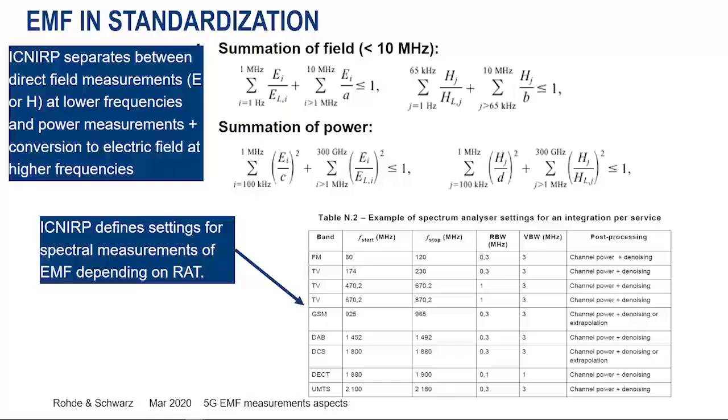It's also important to consider that EMF measurements depend on the frequency range. In the very low frequency range, less than 10 MHz, we have to measure both the electric field and the magnetic field. In our typical frequency ranges used for wireless standards — 100 MHz to 6 GHz — we measure only the electric field according to the standards.